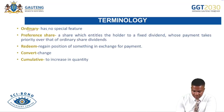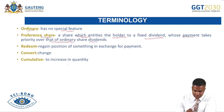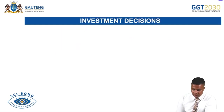The term 'ordinary' refers to anything that has no special feature. A preference share refers to a share which entitles the holder to a fixed dividend whose payment takes priority over that of ordinary share dividends. The term 'redeem' refers to regaining possession of something in exchange for a payment. 'Convert' means to change, and 'cumulative' refers to increasing in quantity.